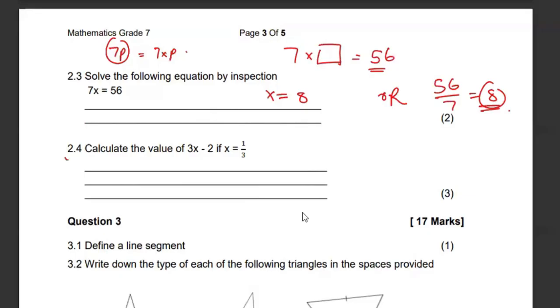Then 2.4, calculate the value of this if X is 1 over 3. So where there is X, we're going to replace it with 1 over 3. This is going to be 3 times 1 over 3 minus 2. So 3 times a third is just 1 minus 2. We must get negative 1 as our answer.